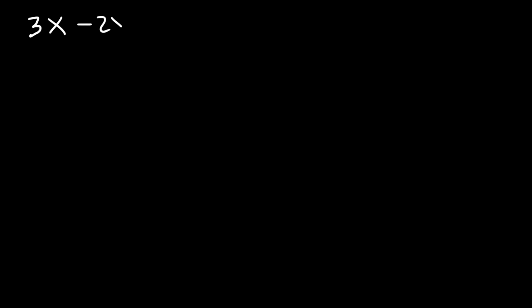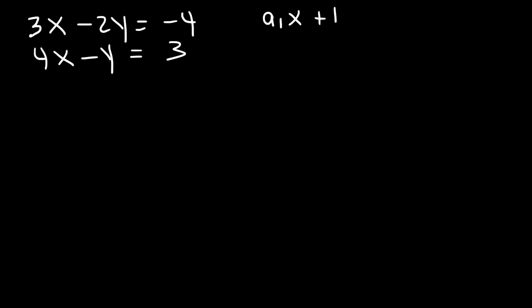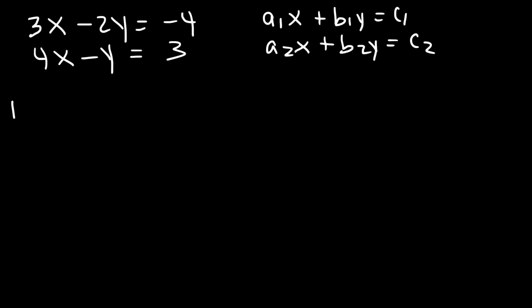Let's try one more example for practice. 3x minus 2y equals negative 4, and 4x minus y equals 3. Use Cramer's rule to get the answer. This is in the form a1x plus b1y equals c1, and a2x plus b2y equals c2. Let's calculate d first.